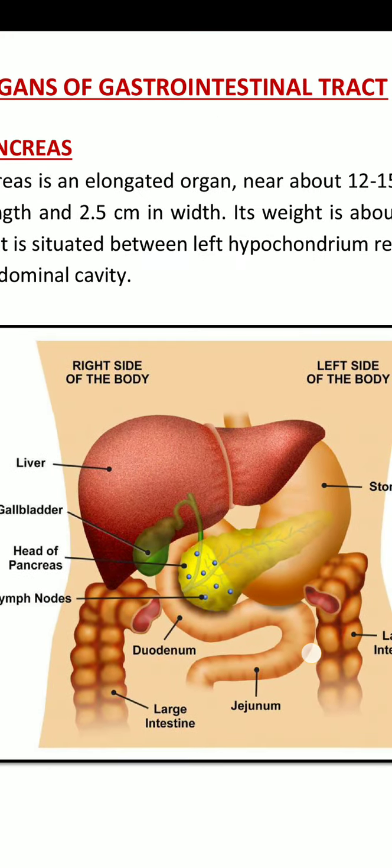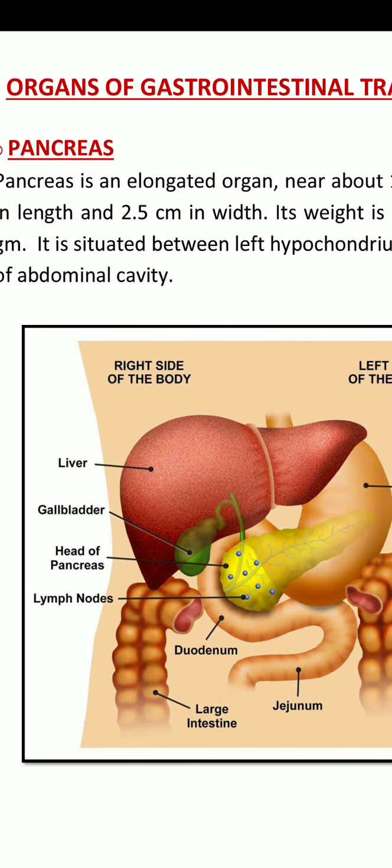You can see the bright yellow colored part marked as the head of pancreas. The head of pancreas is a rounded organ which lies in the curve of the duodenum, which is the first part of the small intestine.